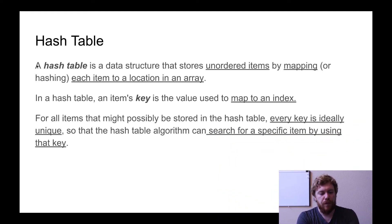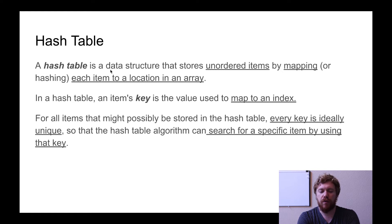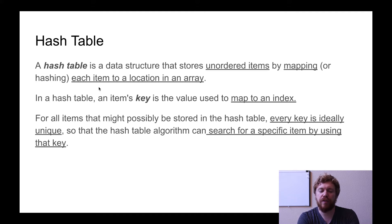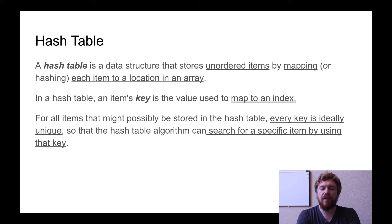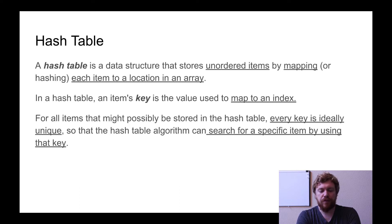A hash table is a data structure that stores unordered items by mapping or hashing each item to a location in an array. The underlying structure for a hash table is an array. It has unordered items, and it uses this mapping or hashing — we'll go over what that is shortly.